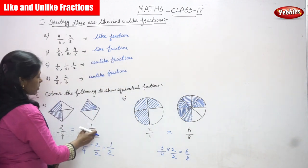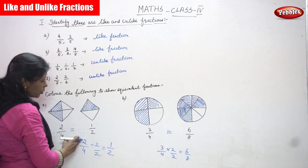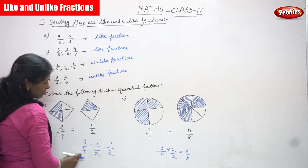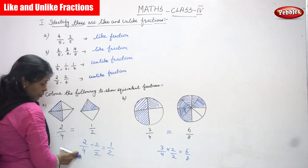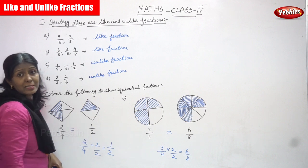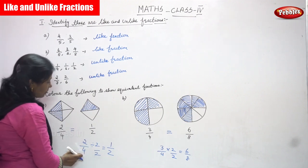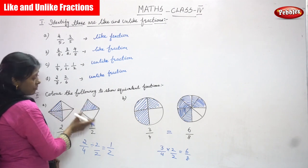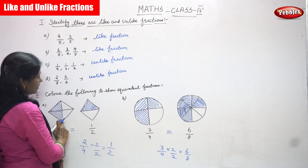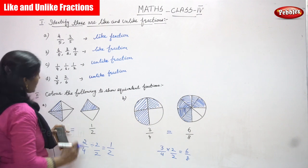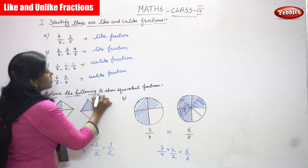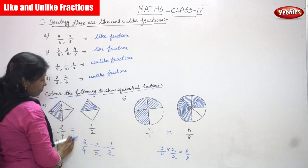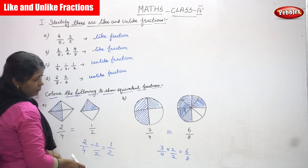Here also 2 by 4 is equal to 1 by 2. What you are going to do: take 2 by 4 and divide by 2 — you get 1 by 2. That means the numerator and also the denominator is divided by 2, and you get the answer 1 by 2. So 2 by 4 is equal to 1 by 2. I shaded the portion in blue color. Color the following to show equivalent fractions — I colored the diagram and proved it is an equivalent fraction.